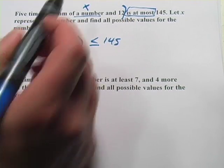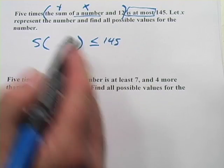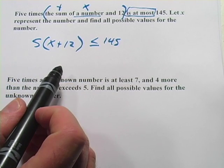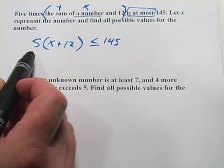Sum means addition. And then we've got 12. So you can write that as x plus 12. That's the sum of a number and 12. And this is five times the sum of a number and 12.